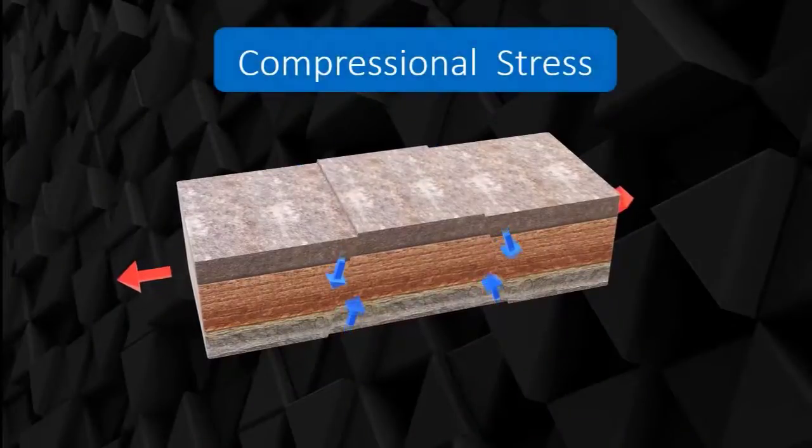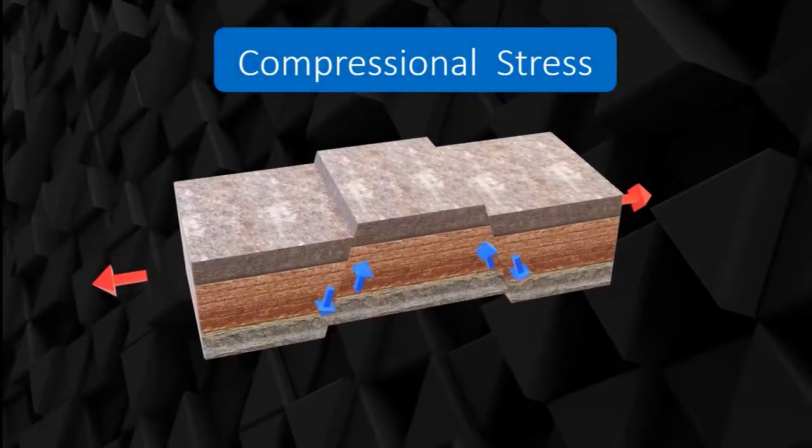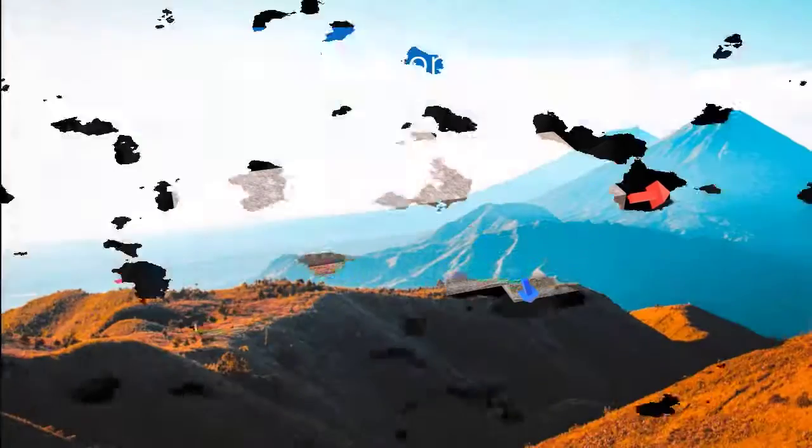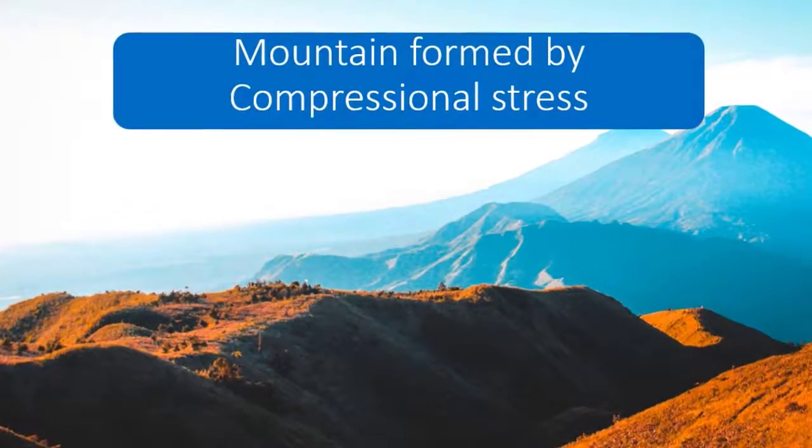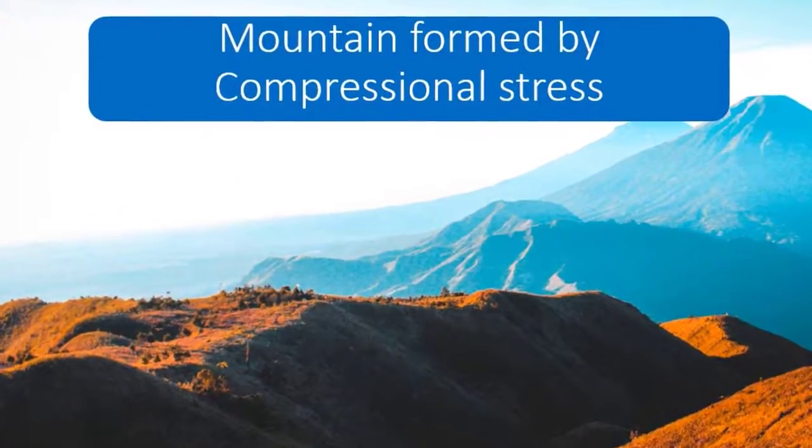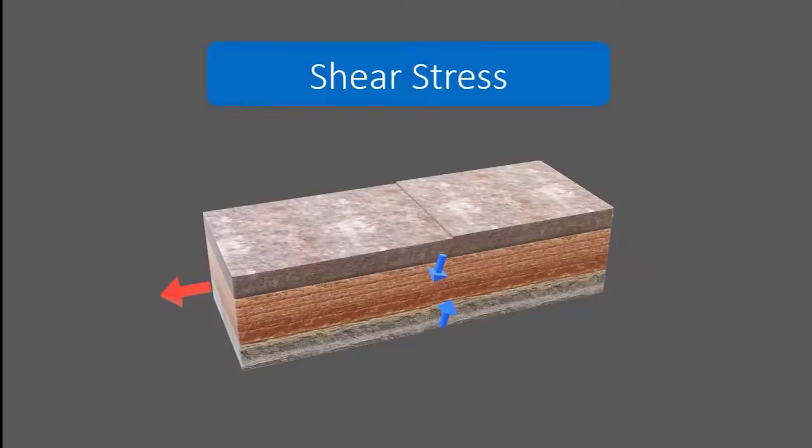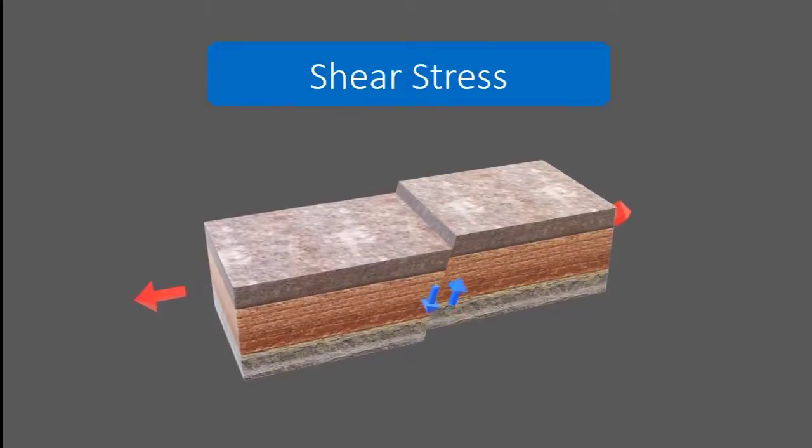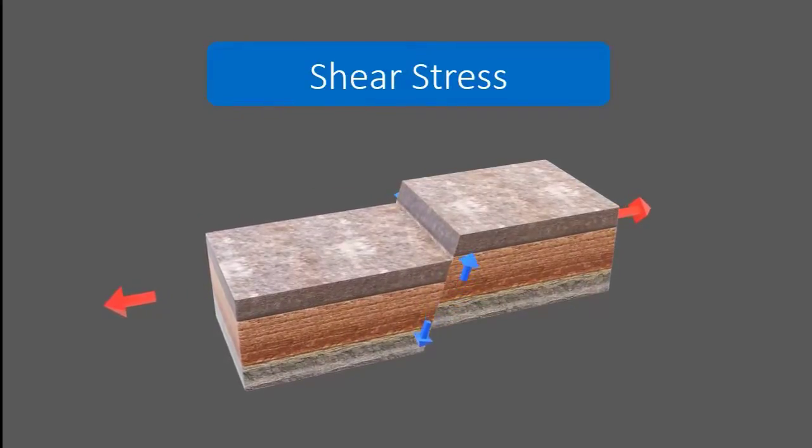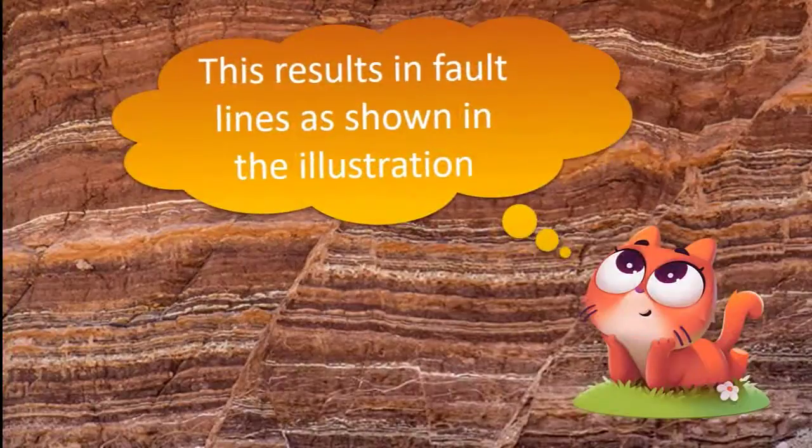Compressional stress is a result of two plates of earth's crust colliding with each other. Compressional stress results in the formation of tall mountain ranges like Himalayas. Sheer stress happens when two plates rub against each other in opposite direction. This results in fault lines as shown in the illustration.